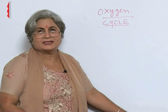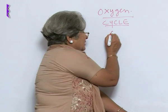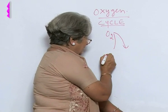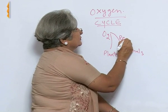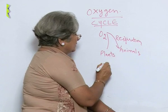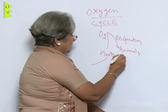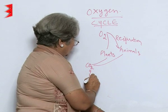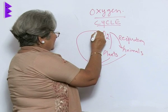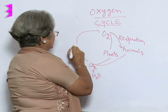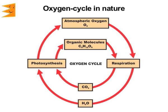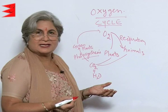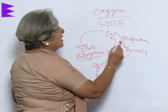The oxygen cycle is just the reverse of the carbon cycle. The oxygen present in the atmosphere is used by plants and animals for respiration, producing carbon dioxide and water. This carbon dioxide is then used by green plants for photosynthesis, releasing oxygen. So once again, the important processes are photosynthesis and respiration.